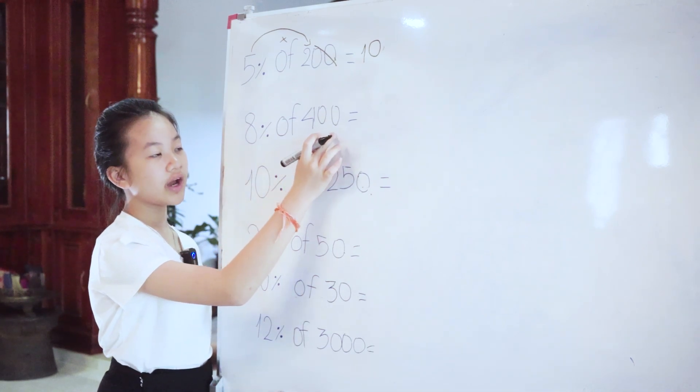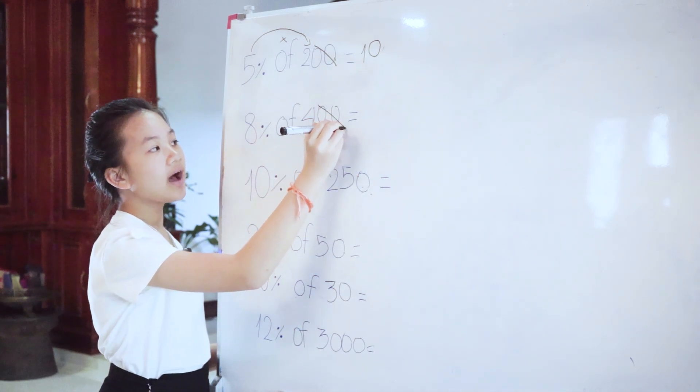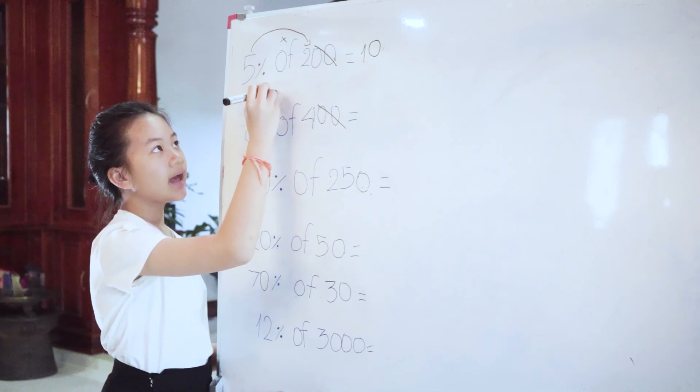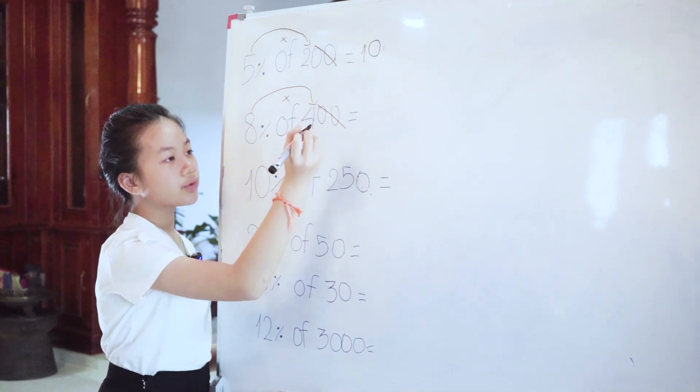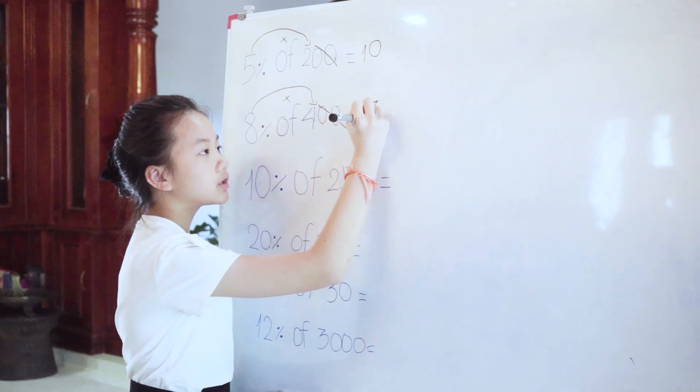The next one, 8% of 400, cut the zero out, then 8 x 4 equals 32.